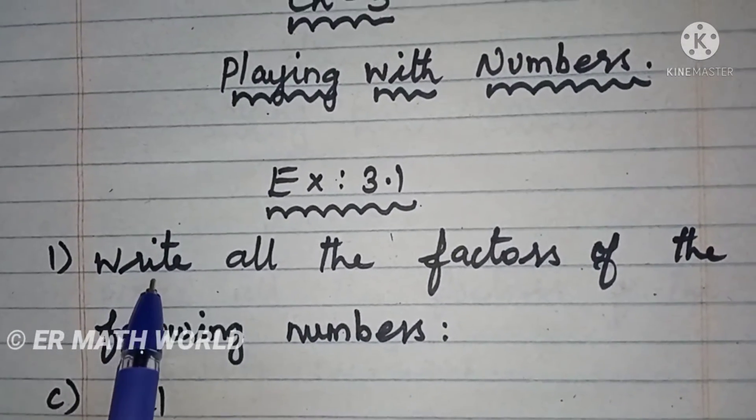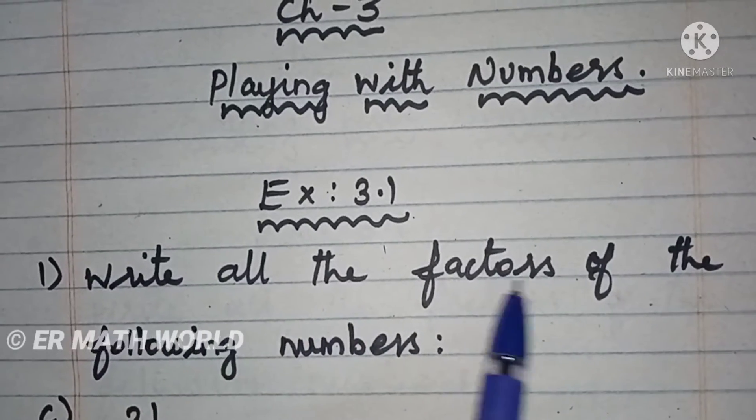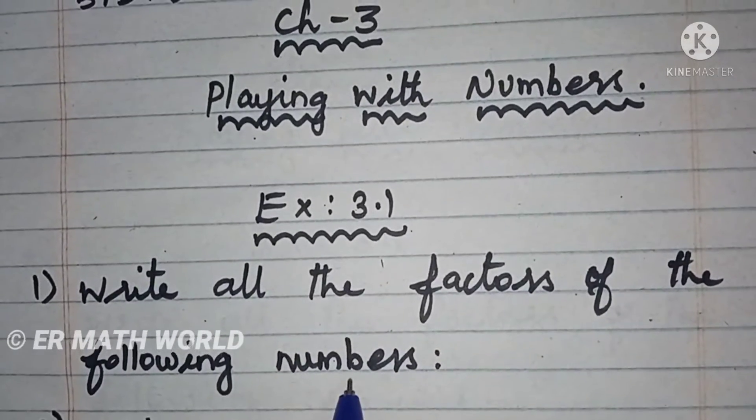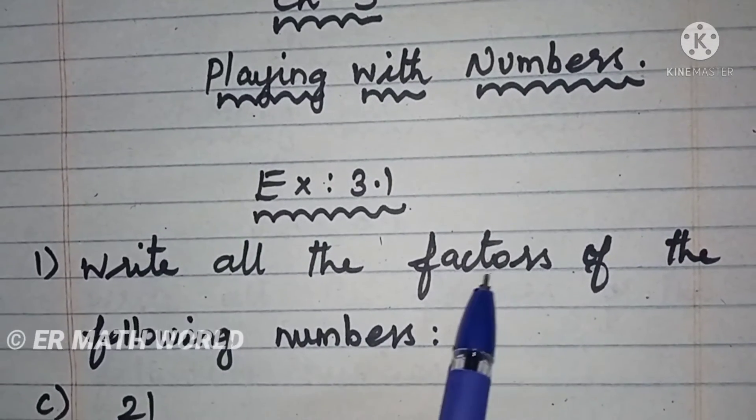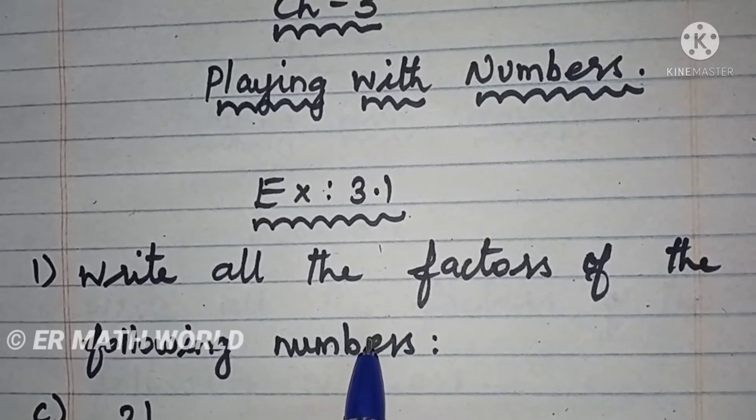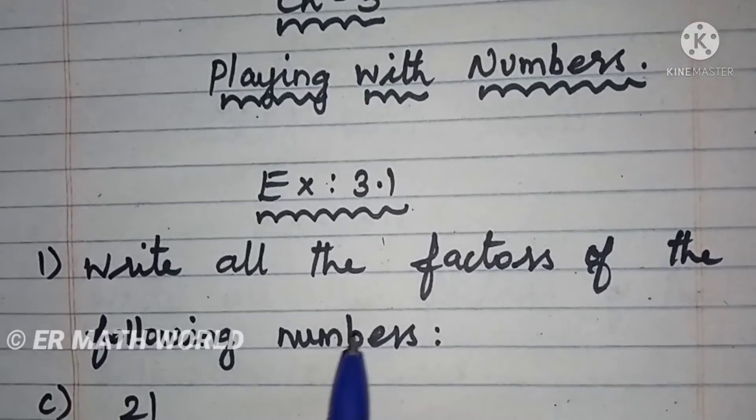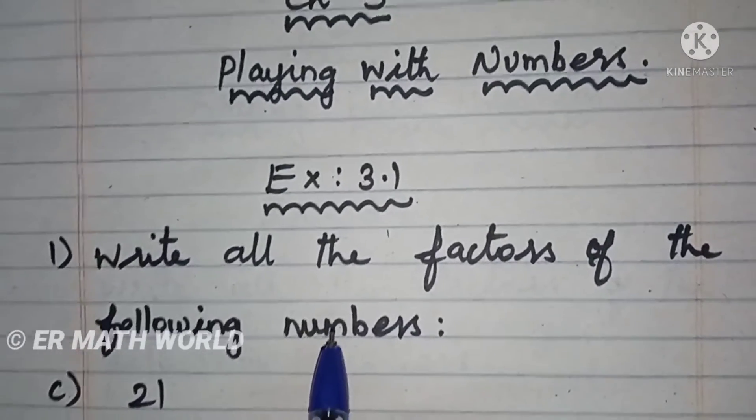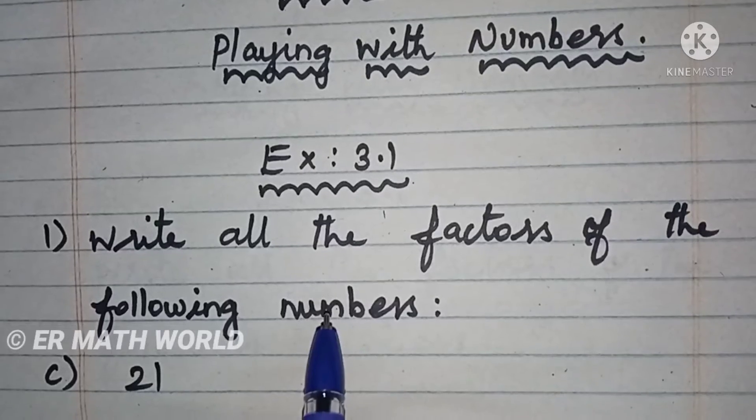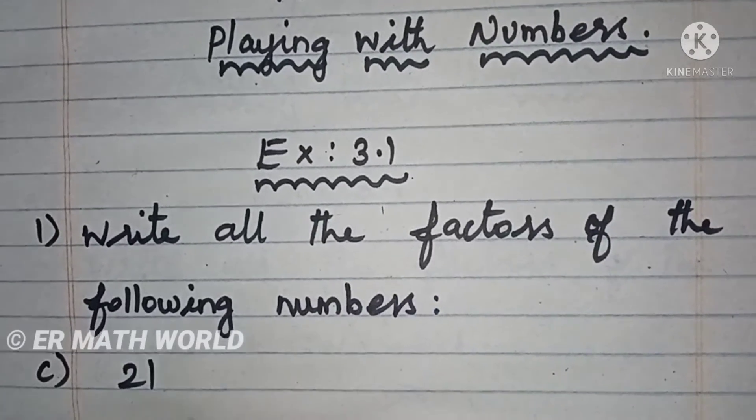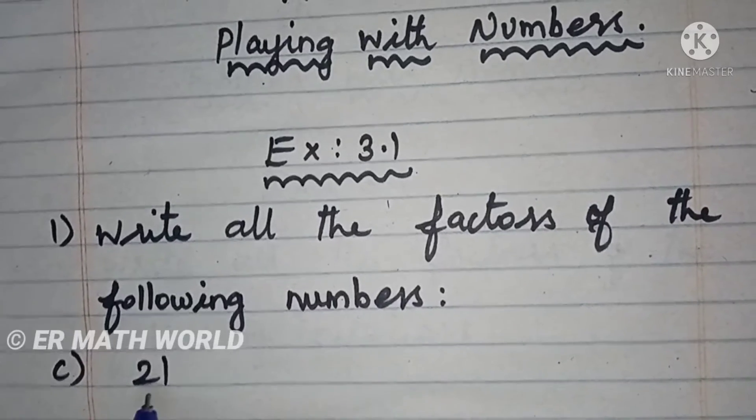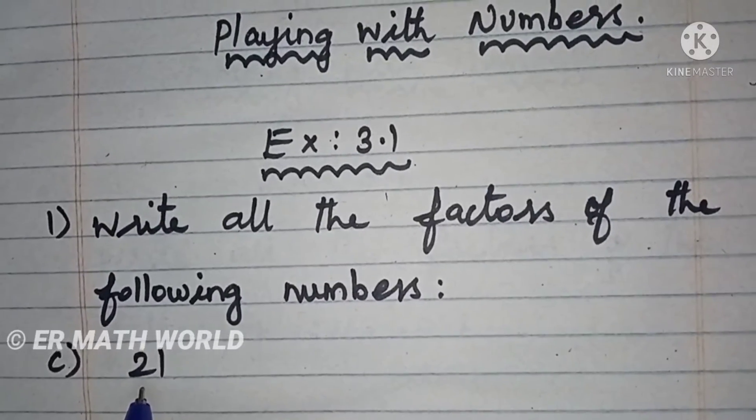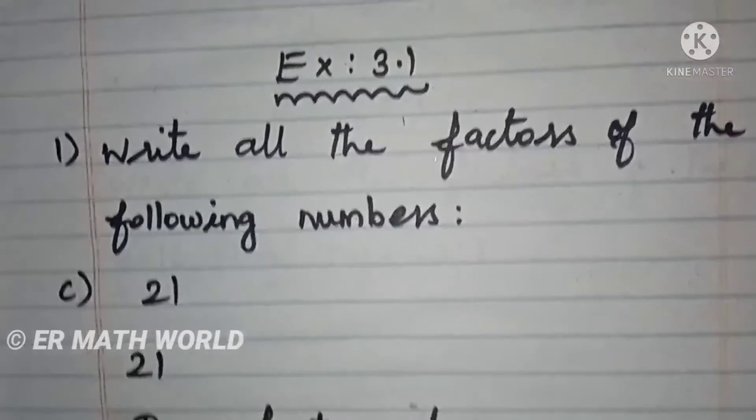Write all the factors of the following numbers. We know very well what is a factor. Factors are when a particular number is divisible by another number without getting any remainder. For this number, you are going to find the factors.